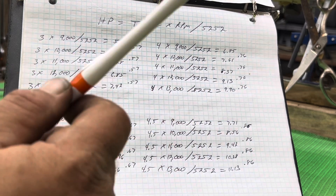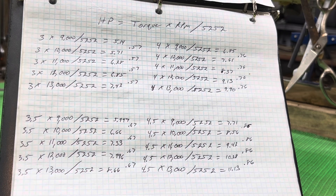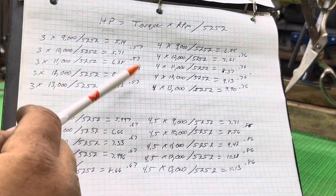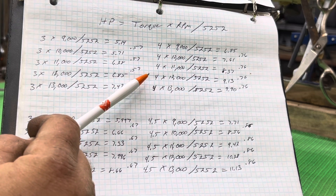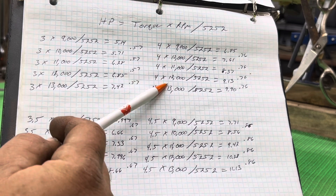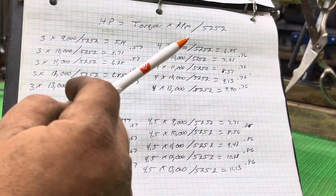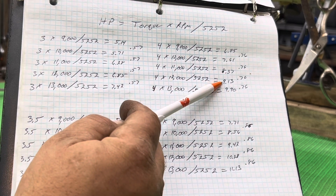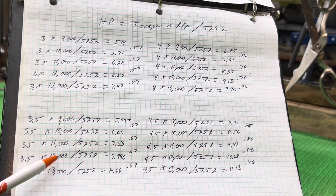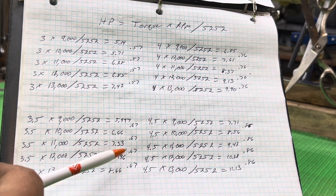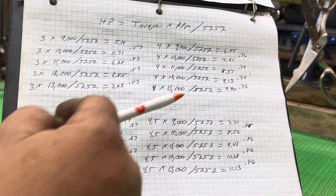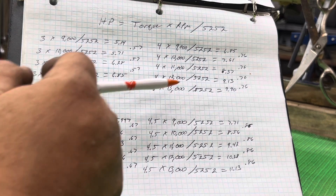This is where YouTube kind of falls short on this subject, because it's easy to see the RPM on video. If you see something running at 12,000 RPM you think it's really cooking, but you don't know how many foot-pounds of torque it's producing — there's no way to tell. So this saw cutting at 12,000 RPM with 4 foot-pounds of torque is going to be pulling 9.13 horsepower, while one at 3.5 foot-pounds of torque at 12,000 RPM is running at 7.996 horsepower — that's almost a full horsepower difference from just half a foot-pound of torque.